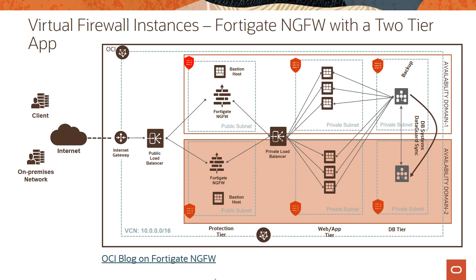To maintain high availability and distributed traffic flow, there is a private load balancer inside the private subnet, as you can see here, which distributes the traffic among your web or app tiers. The private load balancer balances traffic across multiple instances across the two availability domains. Within your database tier you have the database setup, and for high availability there is a Data Guard setup in a different availability domain as well.